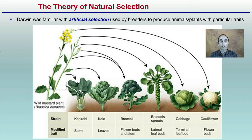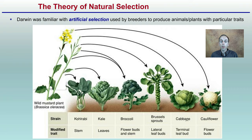Darwin was familiar with artificial selection used by breeders to produce animals and plants with particular traits. If you're familiar with broccoli, kale, cabbage, or cauliflower, they all go back to the wild mustard plant. Through selective breeding, growers have been able to take wild mustard and produce kale, broccoli, brussels sprouts, cabbage, and cauliflower with modifications to certain traits — whether it's the stem, leaves, terminal bud, or flower buds — all traceable back to a common ancestor.